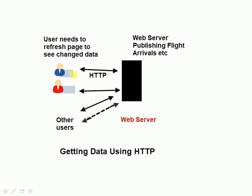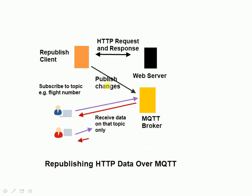This isn't really a problem if you've only got one client, but if you've got hundreds or thousands of clients, then you're going to be sending lots of data between the web server and the client, and most of that data will be the same with not much change. What we're going to do is take that data from the web server — read a web page using a Python script — process that page, publish the changes onto an MQTT broker, and clients receive the data from the MQTT broker.